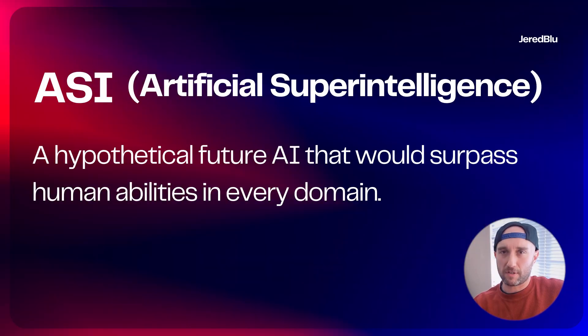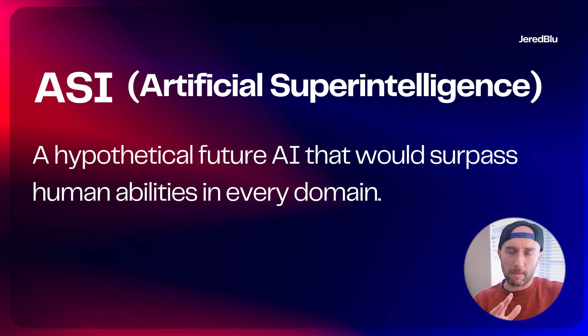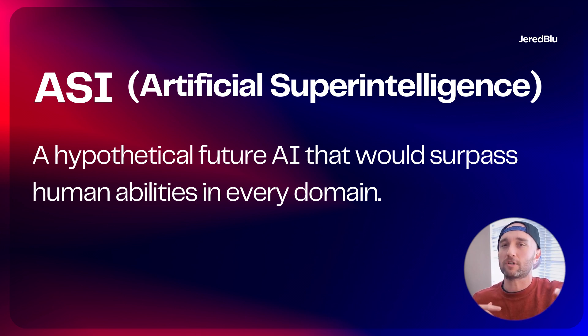The next stage after AGI is ASI, and it's not that far behind — people believe it will happen quite fast after reaching AGI. ASI stands for Artificial Super Intelligence, which means AI that will surpass human capabilities in every way. We won't be able to fully understand it — it will speak its own language, learn and teach itself, and improve itself. That is the big one, where it gets to the science fiction future we see in movies. But it doesn't have to be scary — if we do this right, it doesn't have to be scary.